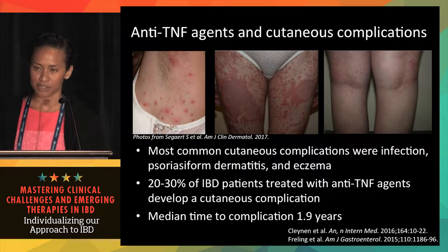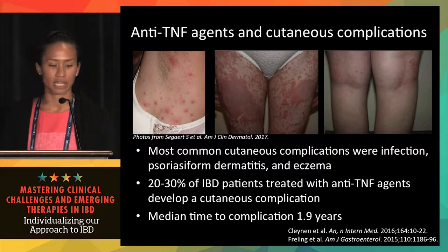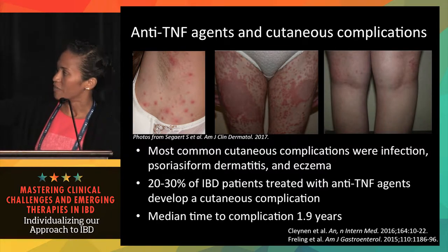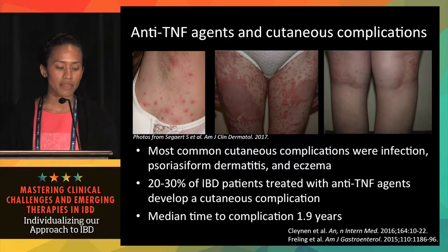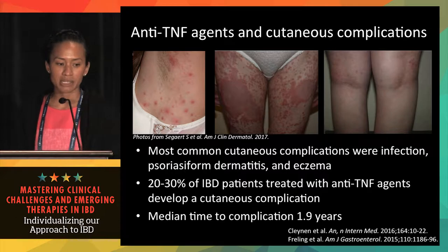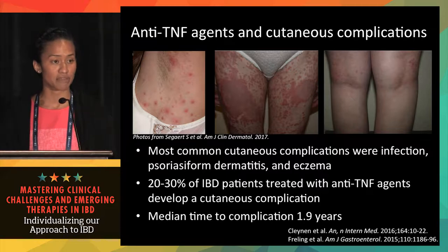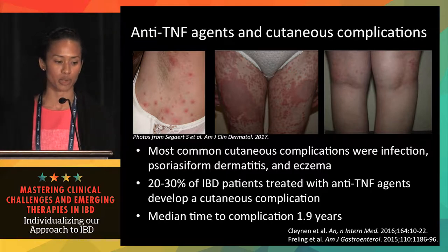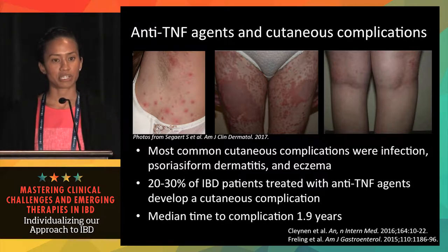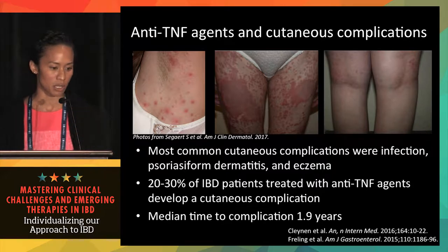I've included three photos of the most common complications: bacterial folliculitis on the end, psoriasiform dermatitis in the center, and a typical presentation of eczema affecting the flexural surfaces — the popliteal fossa pictured here. The median time to appearance of these rashes is typically 1.9 years after initiation of therapy. There does seem to be some variability depending on the anti-TNF agent, with some appearing a little faster.